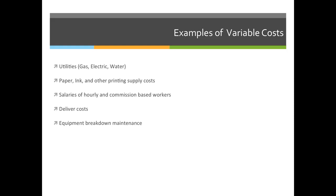Commission is always a variable cost because you never know how much you're going to sell. One month you might sell $4 million worth of printing, and the next month you might only sell $200,000, so it is a variable cost. Your delivery costs are also variable, but we don't have to budget for those because just like paper and ink, we don't deliver unless we print, and if we print, we give the customer a bill for the delivery charge.